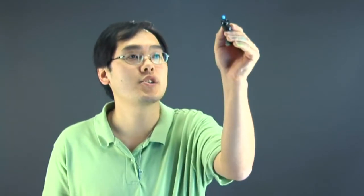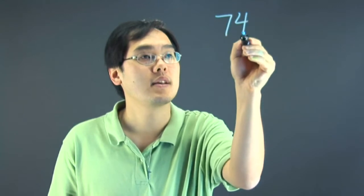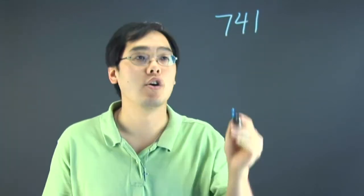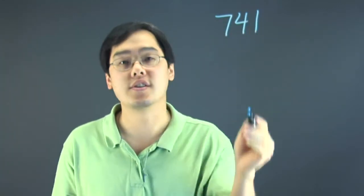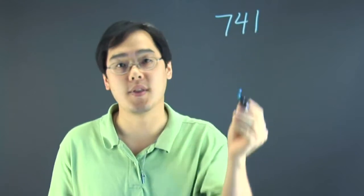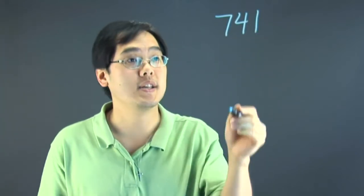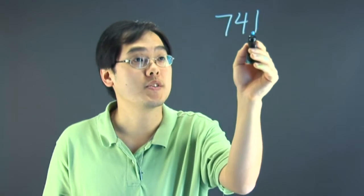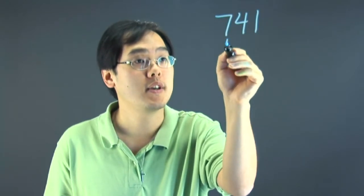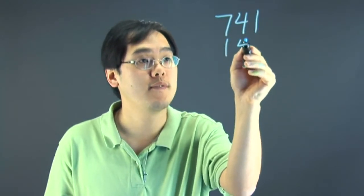So to start off, we're going to have a three-digit number with decreasing digits. For example, 741. All the digits are in decreasing order — 7, then the 4, then the 1. Now what you want to do is reverse the digits. So 741 reversed gives you 147.